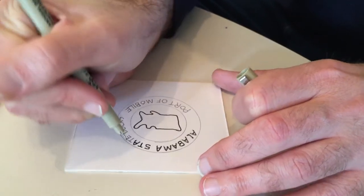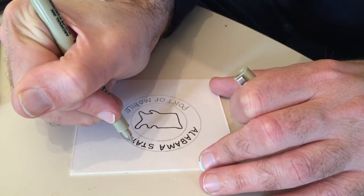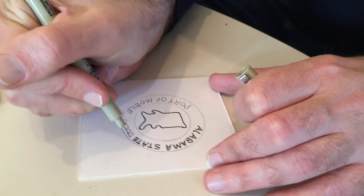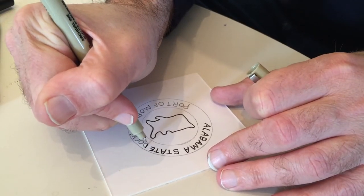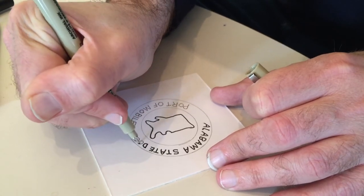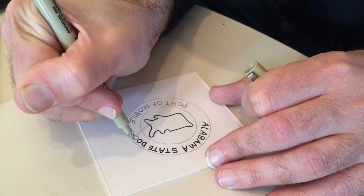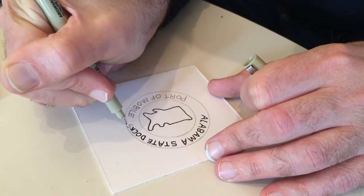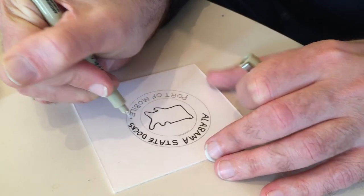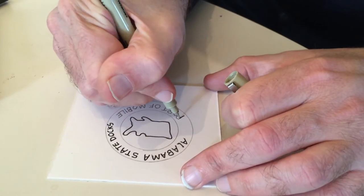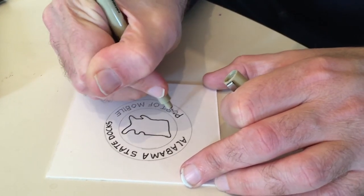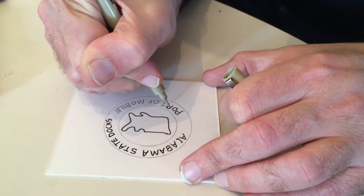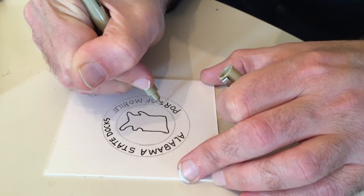These boxcars wandered all across America. I used to see them in my hometown of Davis, California all the way from Alabama. These cars came I used to see them in Montana and they would make you think wow where is this port of Mobile, Alabama.